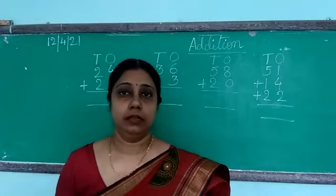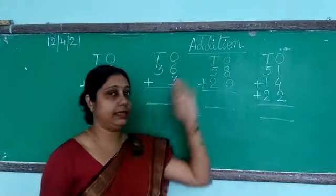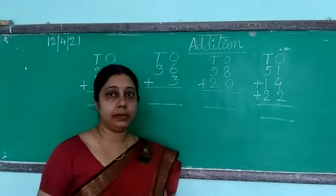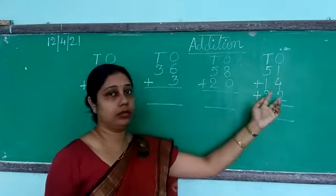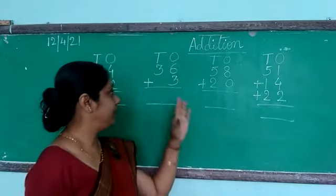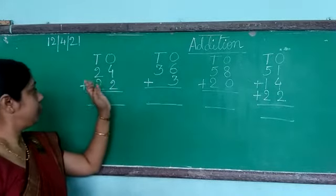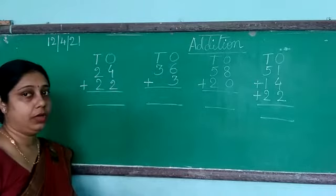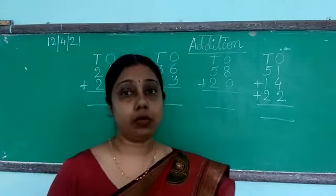Good morning children. Today we are going to discuss addition — addition with two digit numbers. We are going to add two digit numbers in three columns. The very first question we are going to add is 24 plus 22, and we are going to add here without carry.